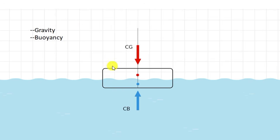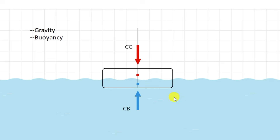Let's say this is our fishing kayak. This kayak is floating because of two forces: gravity and buoyancy. Gravity pulls the kayak down, buoyancy pushes it up, and these two forces cancel one another out — as a result, the kayak stays afloat. The center of gravity is the center of the weight above the water. The center of buoyancy is the center of the volume of the kayak under the water, or the center of the amount of water that is displaced. When there is no external force, the center of gravity and center of buoyancy are vertically aligned. In this position, the kayak is in static equilibrium — it is stable.